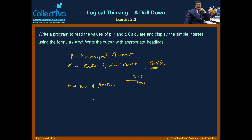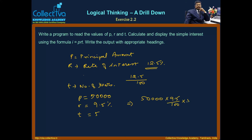Now consider this investment example: P equals 50,000, R rate of interest is 9.5%, and number of years T is 5. So for simple interest: 50,000 multiplied by 9.5 divided by 100, multiplied by 5.